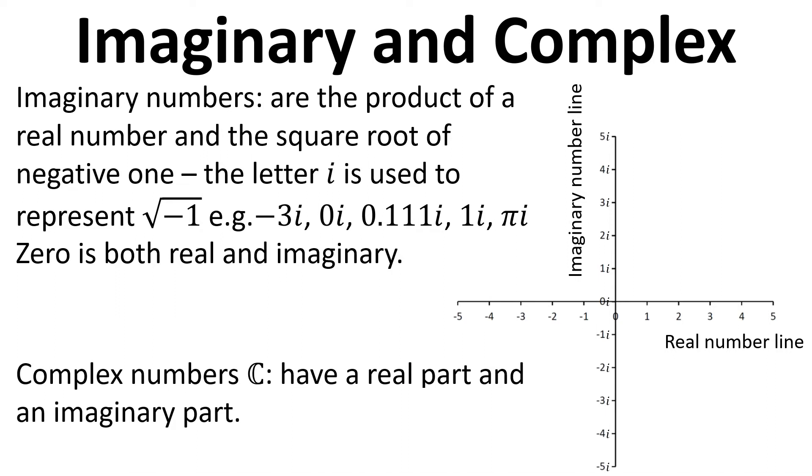Then we also have complex numbers. These have a real part and an imaginary part. The general form is a plus bi, where a and b are real numbers and i is the square root of minus 1. If we wanted to locate a complex number, we need both an imaginary number line and a real number line.